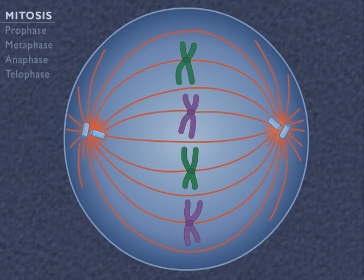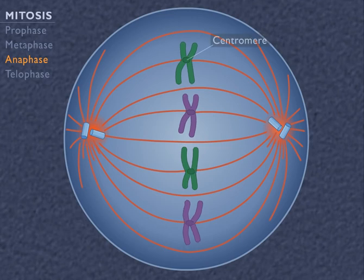Anaphase begins when the sister chromatids of each chromosome begin to separate. The centromere that holds sister chromatids together divides, and the chromosomes move away from each other along its spindle fiber.